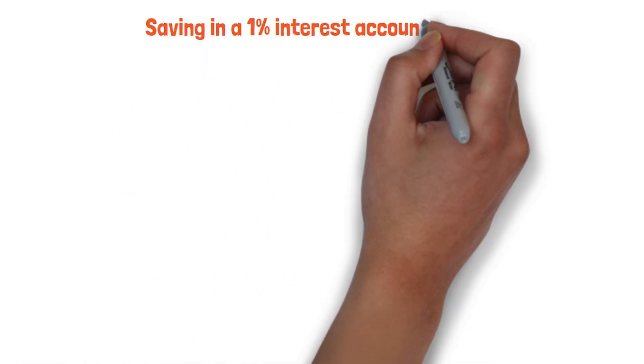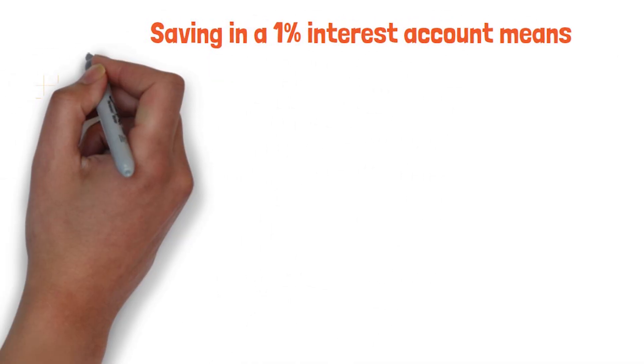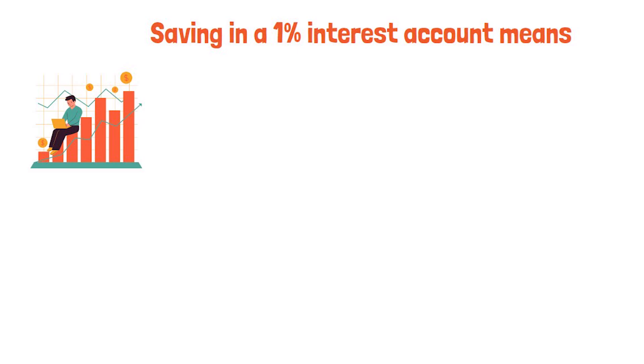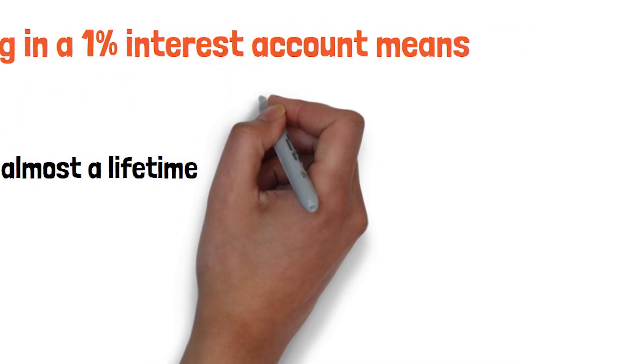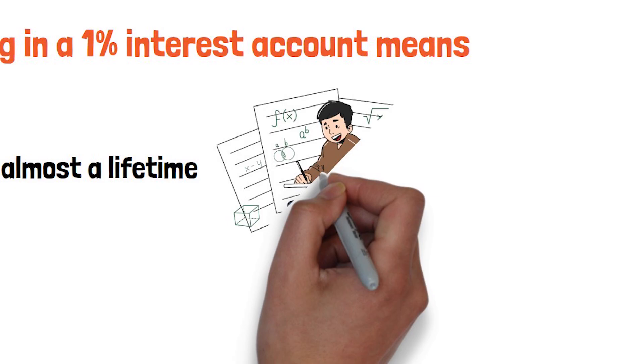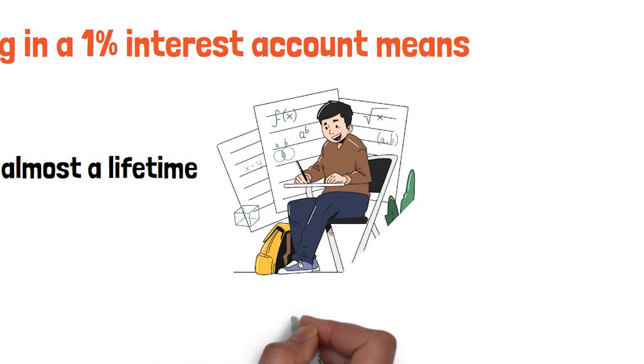Saving in a 1% interest account means your money will take 72 years to double. That's almost a lifetime. I'll show you a single 5-second math trick that reveals whether your money is actually growing and what to do if it isn't.